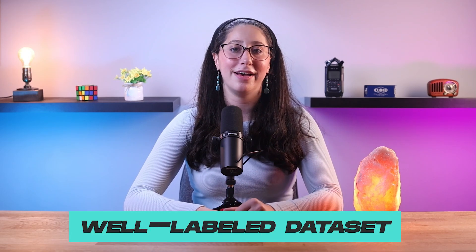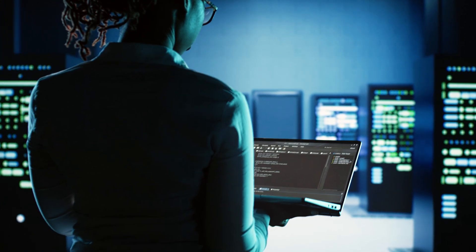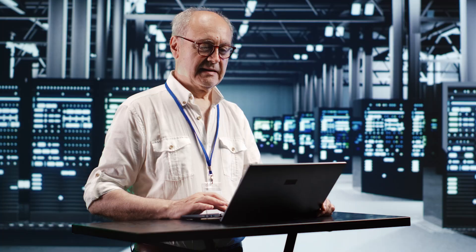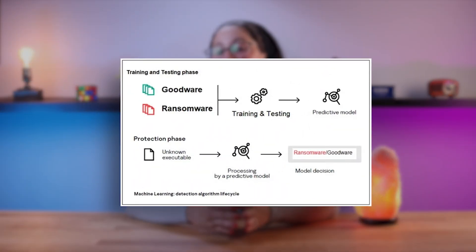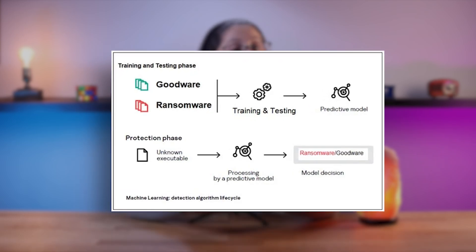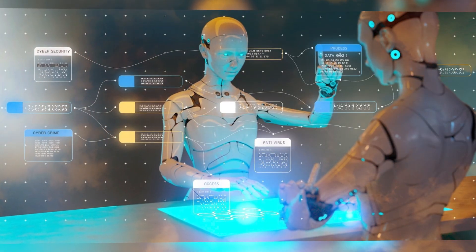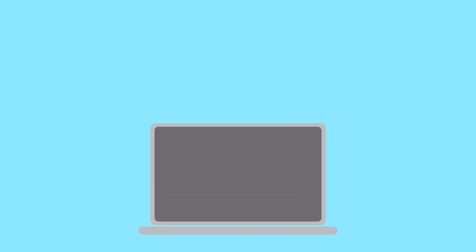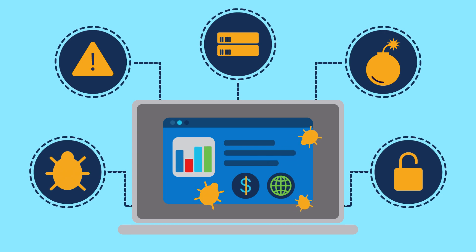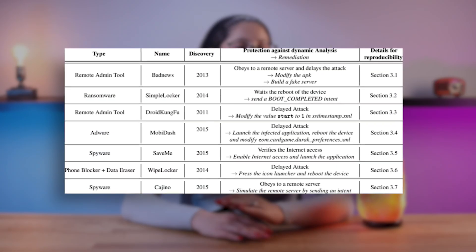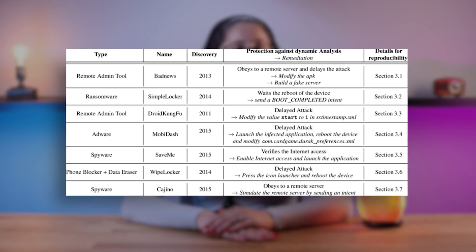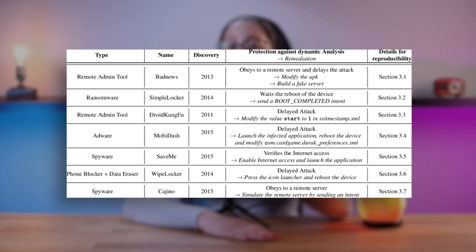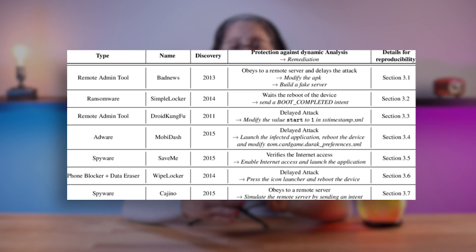Another important step in the machine learning process is creating a well-labeled data set. Security experts manually classify samples of both malicious and harmless files. This labeled data set serves as the foundation for training machine learning models — it provides the models with examples of what to look for when distinguishing between good and bad files, helping them learn to recognize patterns and relationships that indicate malware. The models then select the most relevant features from the data set to improve efficiency and focus on the most important aspects of malware detection, reducing computational complexity.